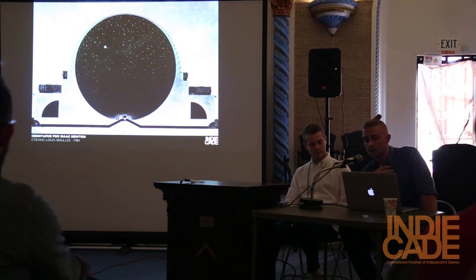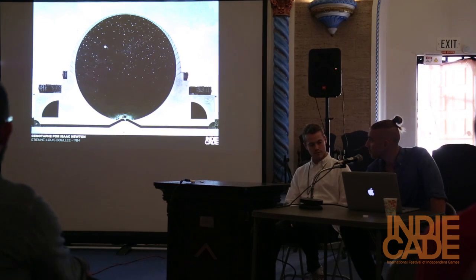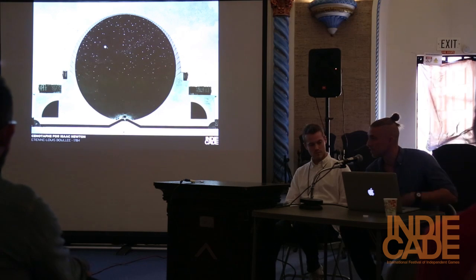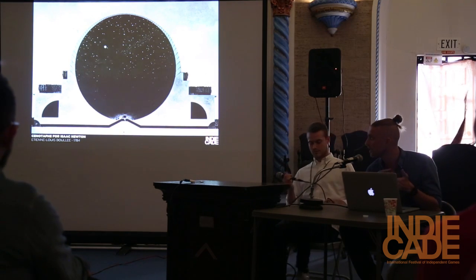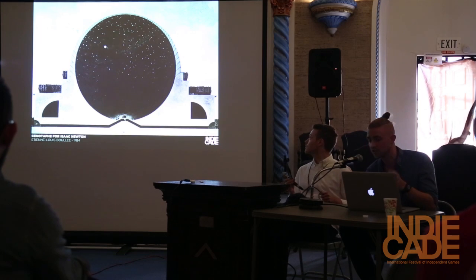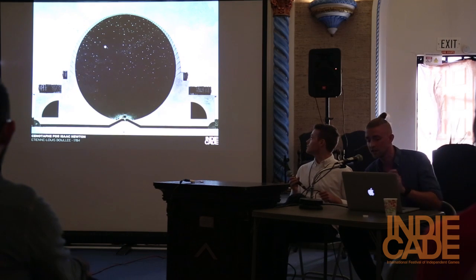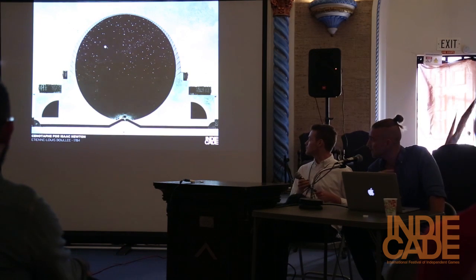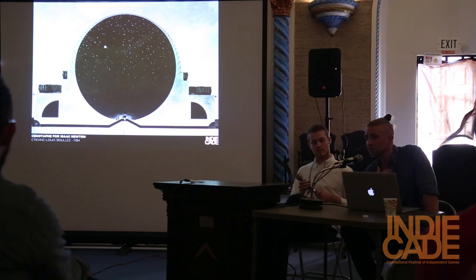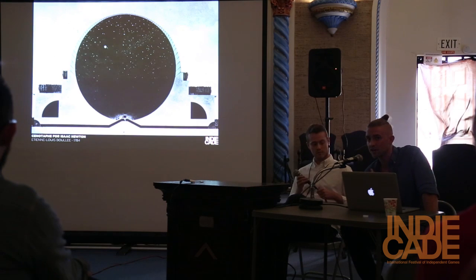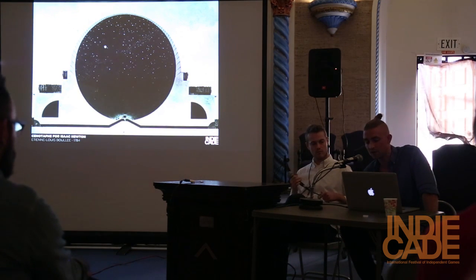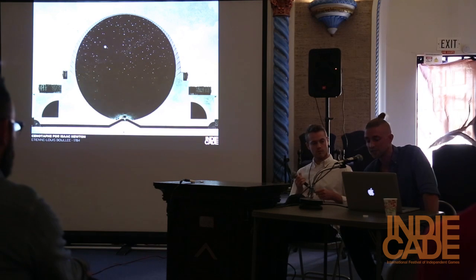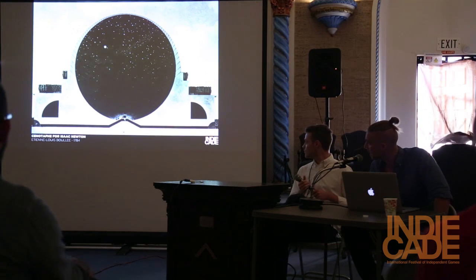Moving on, we have the Cenotaph for Isaac Newton by Boullée. Here again he's playing without the constraints of construction, economy, or physics — that shell looks a little thin. But he's doing this in order to understand a new scale of architecture and helping us imagine it through this section drawing. You can see the little people at the bottom — just imagine how big this space would actually be.